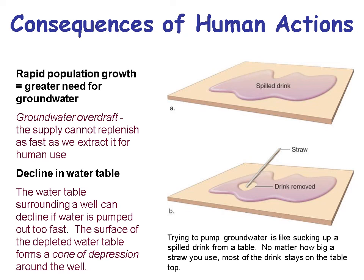As populations increase, you need more water, and one thing that happens is groundwater overdraft. It's like pouring a spilled drink on a table and drinking it up with a straw — the area around that straw gets removed and becomes dry, then you have to move the straw to another spot. A zone of depression forms around the well, just like that straw analogy.